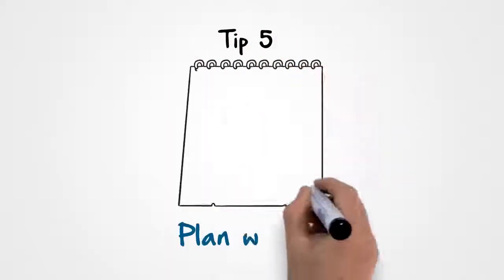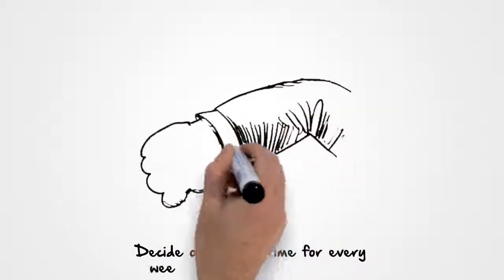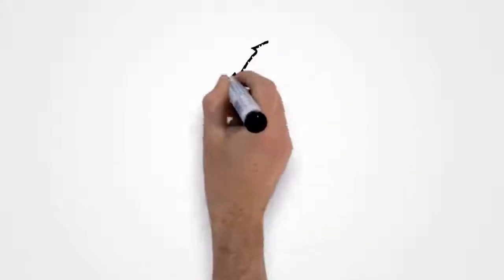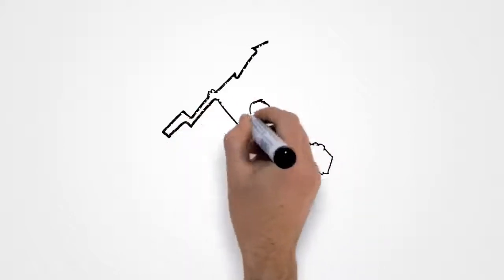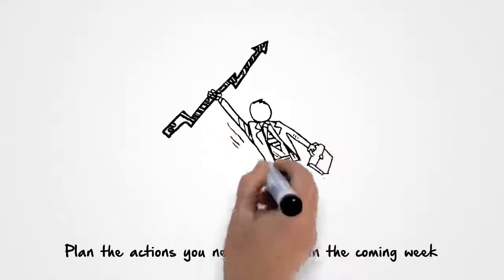Tip 5. Plan weekly. Decide on a fixed time every week to plan the week ahead. Use this time to connect with your dream and to plan the actions you need to take in the coming week to move forward with your goals and vision.